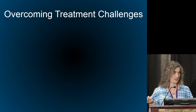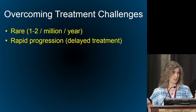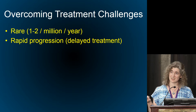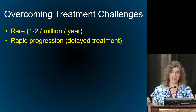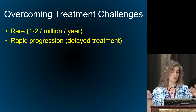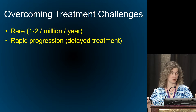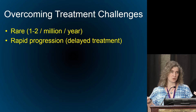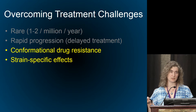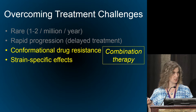What are the treatment challenges and how could we possibly overcome them? First, it's a rare disease, which makes studying patients or putting them into a trial incredibly difficult. Also it's fast — by the time we diagnose patients, their symptoms are advanced and the brain disease is advanced, so we're already at a low average trying not only to halt but reverse the disease. I can't do anything about it being rare and fast, but the drug resistance and strain-specific effects — I argue we might be able to tackle those using a combination therapy approach.